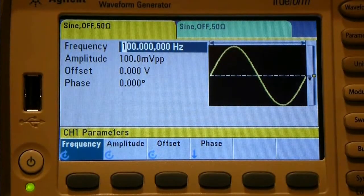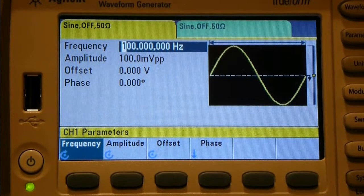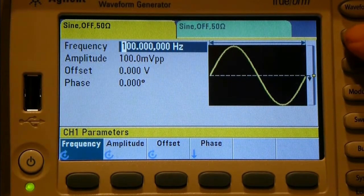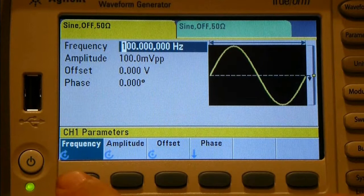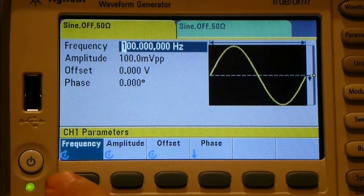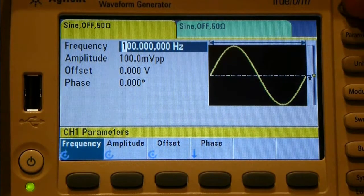Alright, so we've looked at the waveform capability of this device. The next button down is parameters. If I just pick a sine wave, which is what I've got set up right now, you've got your frequency, amplitude, offset, and phase.